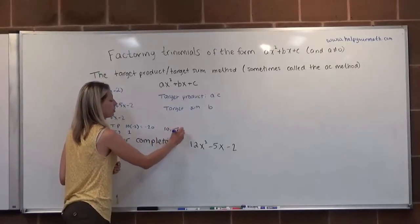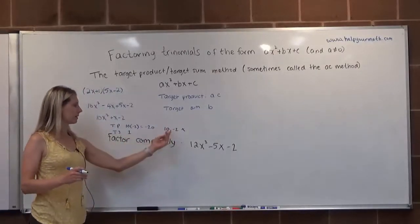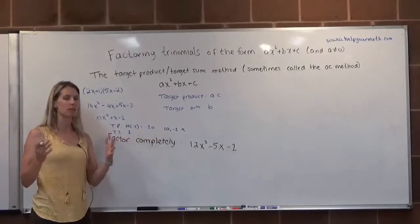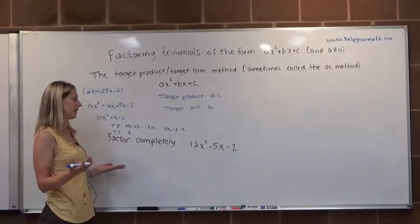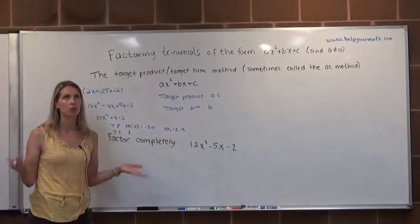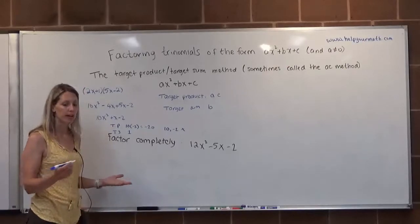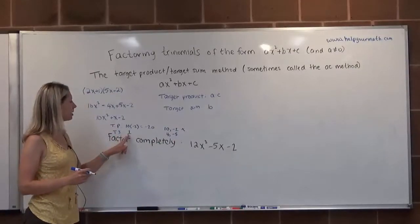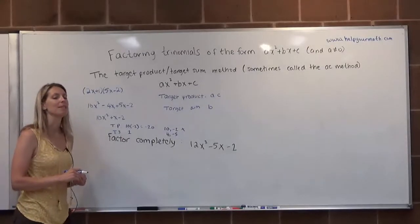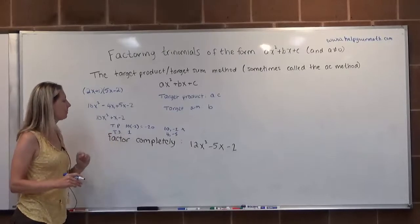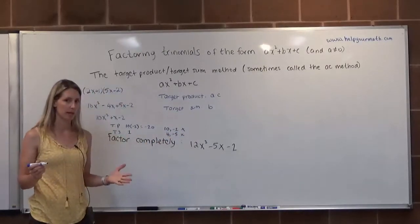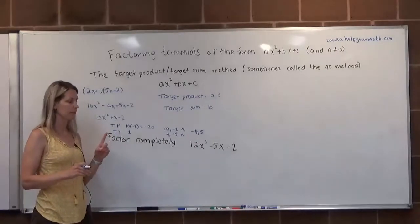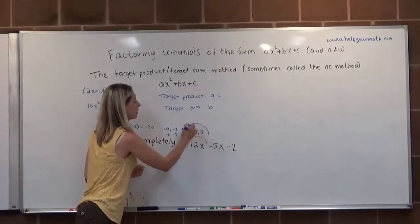I like to write down any combination I try, whether it works or not. I tried 10 and negative 2 — didn't work. Switching to negative 10 and positive 2 also won't work since their sum would be negative 8, not 1. How about 4 and negative 5? That multiplies to negative 20, but adds up to negative 1 — the opposite of what we need. So that means negative 4 and positive 5 is the correct combination: they multiply to negative 20 and add up to 1.